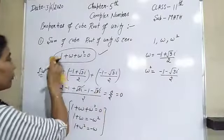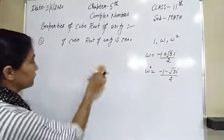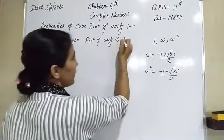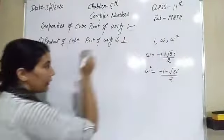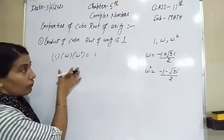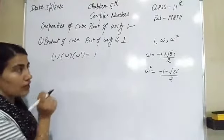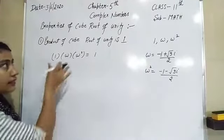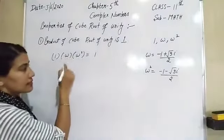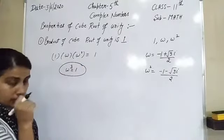The second property is: the product of the cube roots of unity is 1. That means 1 × ω × ω² = 1. You can prove this by putting the values of ω and ω², doing the multiplication, and you will get 1. From this property, ω × ω² = ω³ = 1. So the value of ω³ is 1, and you have to use this result in many questions.